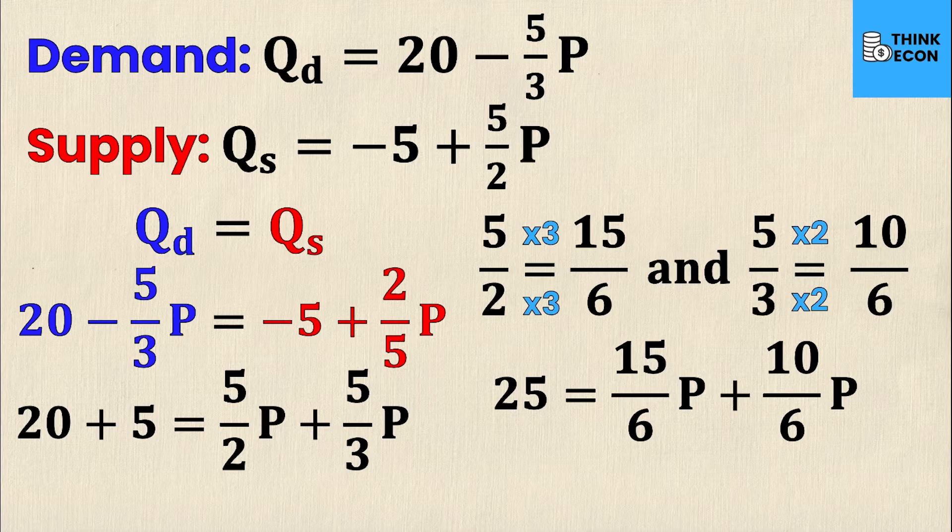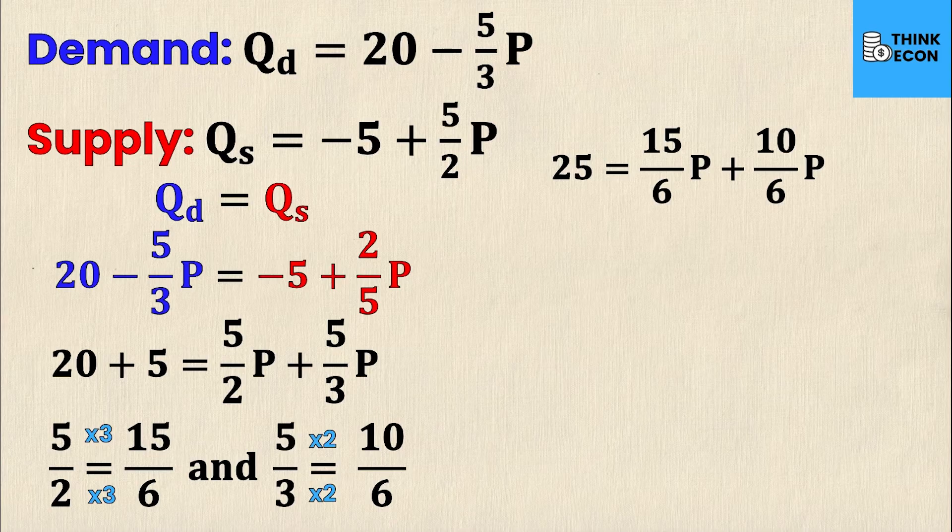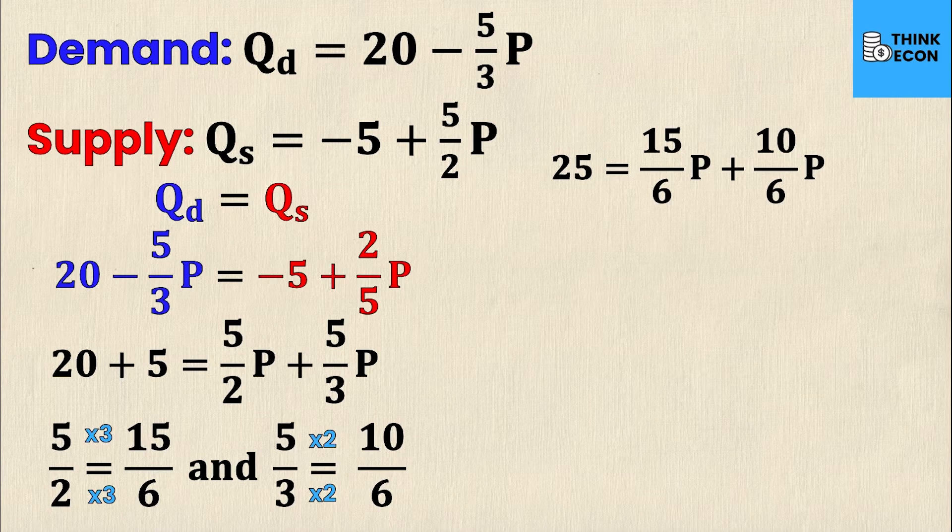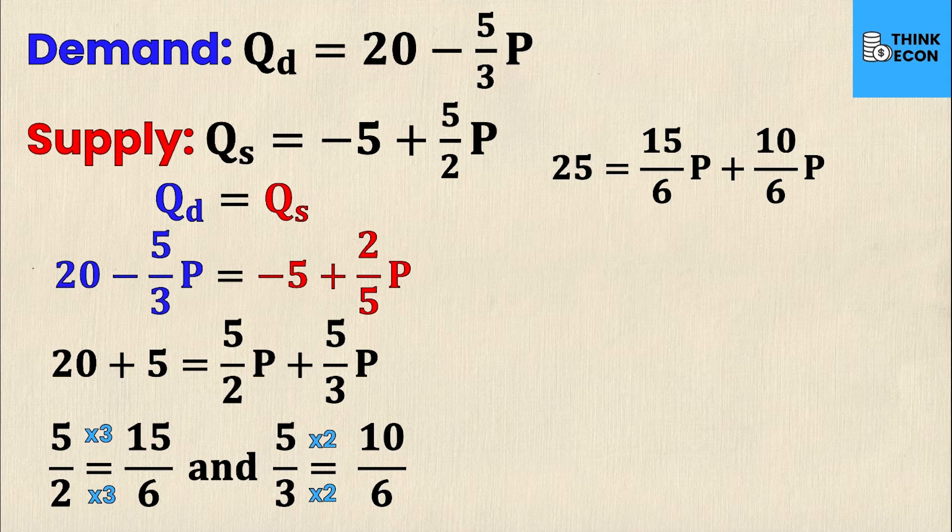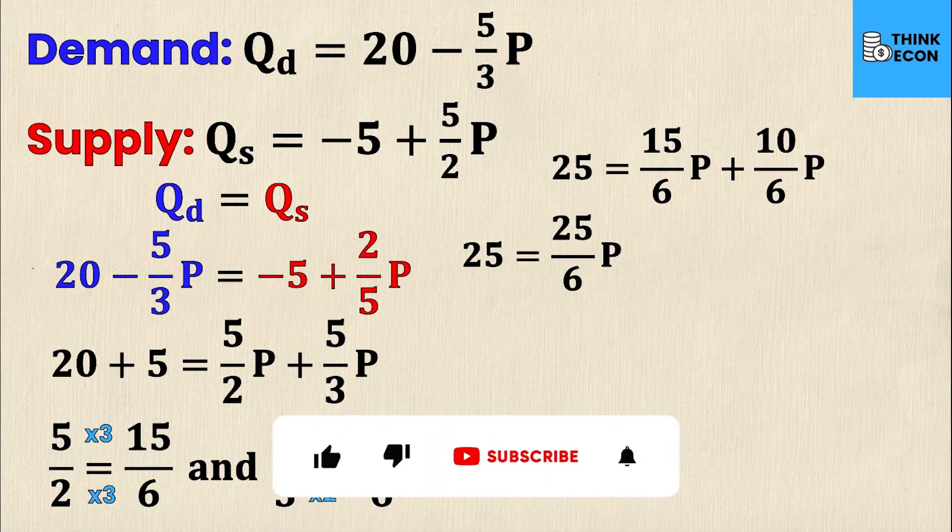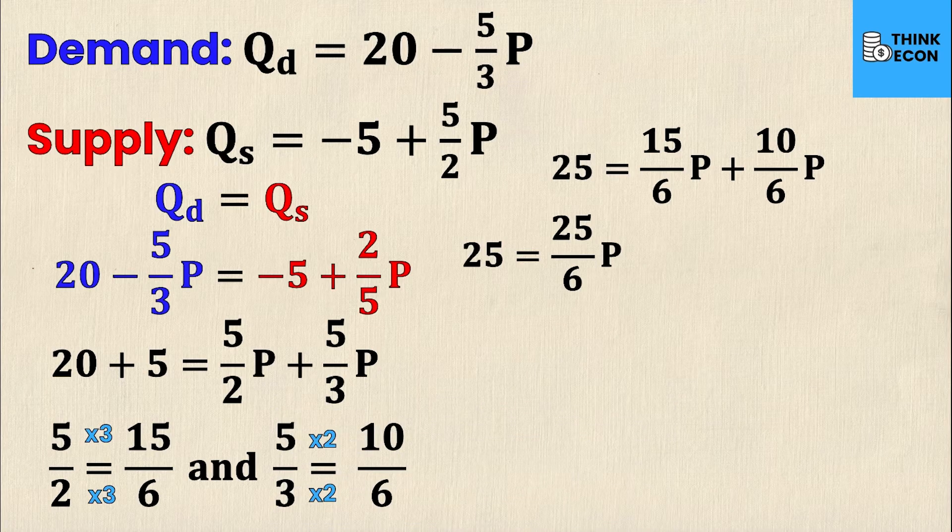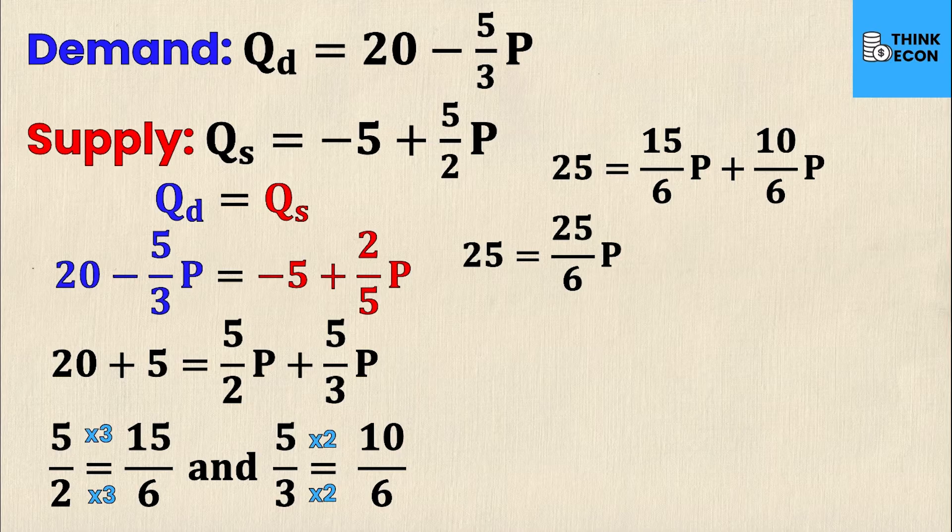I've added 20 plus 5, and that gives me 25. Now I have 15 over 6P plus 10 over 6P. This is just the exact same fractions that we had before, except both denominators are the same, which now lets me add the numerators. So the next line is simple. I just add the numerators on the fractional coefficients on the P values. 25 equals 15 plus 10 over 6, which is just 25 over 6P.